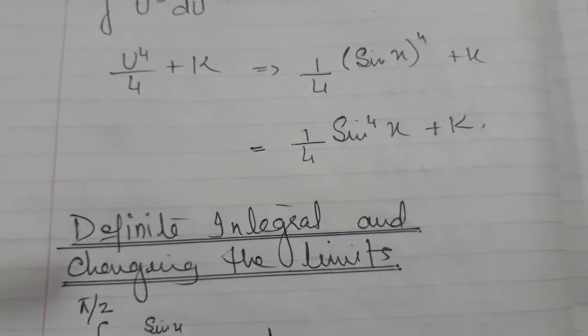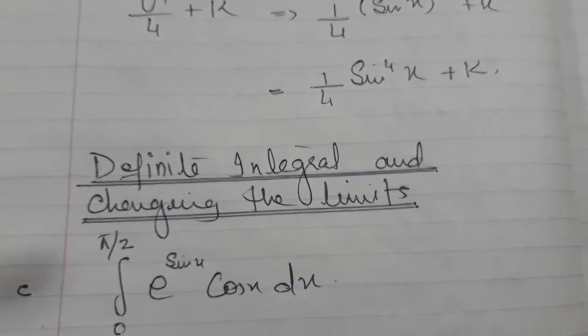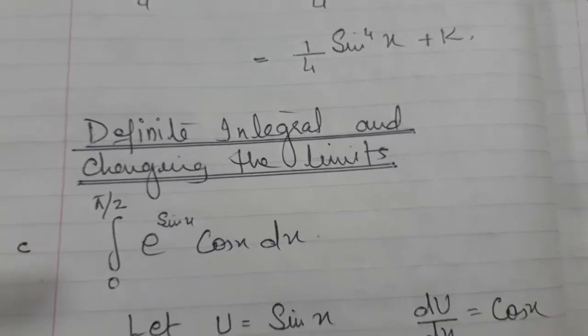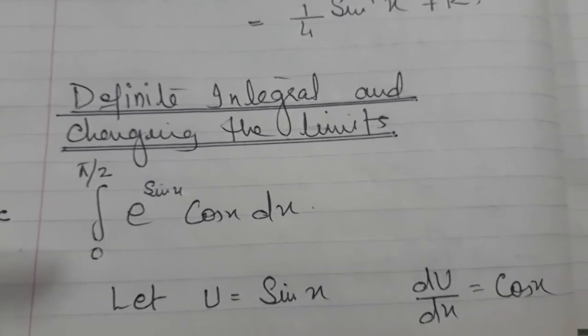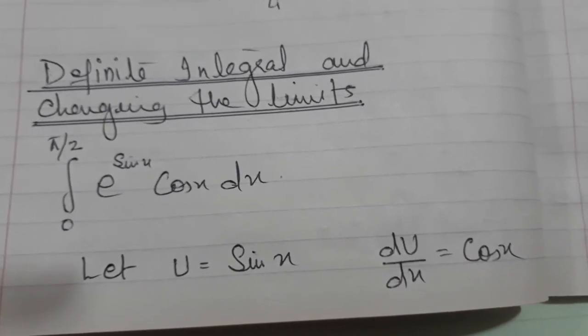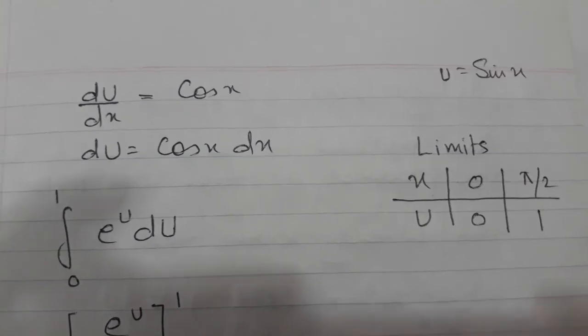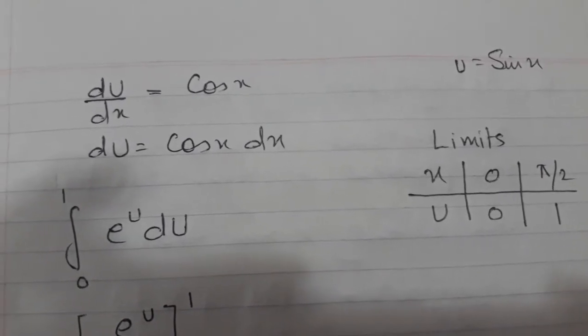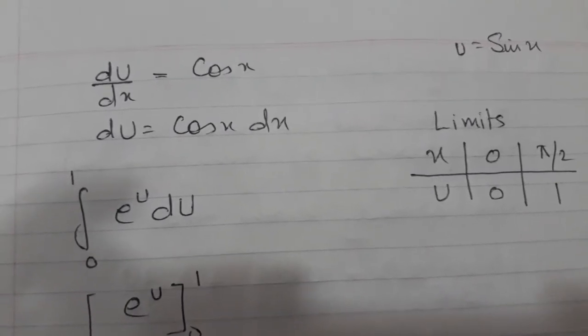Now definite integration and changing the limit. When we are choosing the method integration by substitution, the limits we need to change according to the new variable. Let's see the question. The question is here in front of you and I am taking a substitution u equals sin x. When I differentiated it, it will become du over dx. By separating the variable, du equals cos x dx. My limits which were earlier 0 to pi by 2.